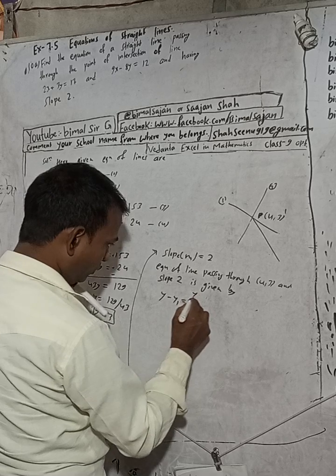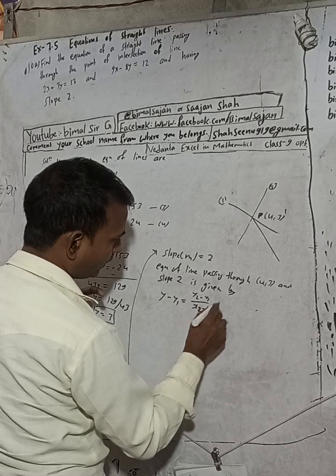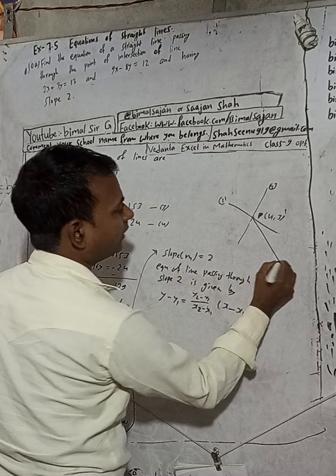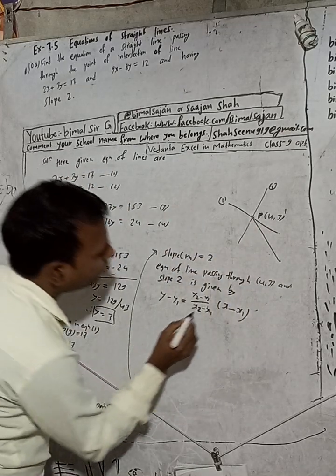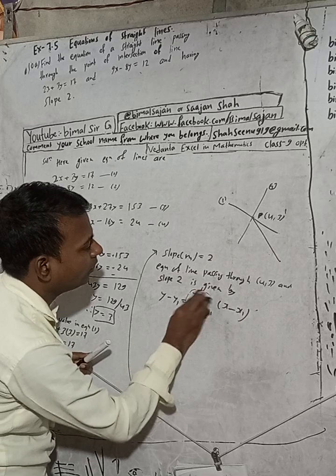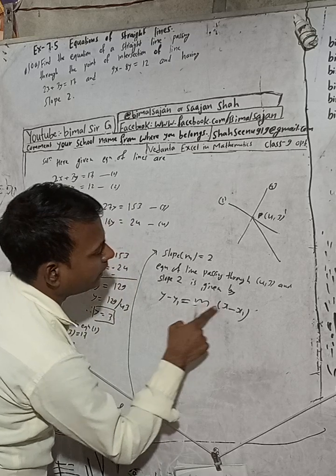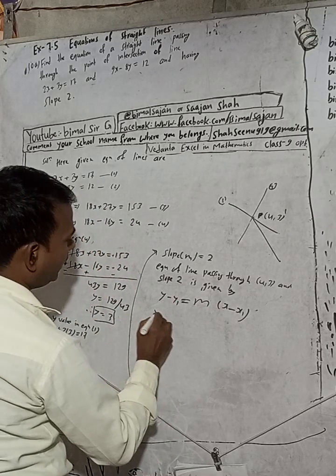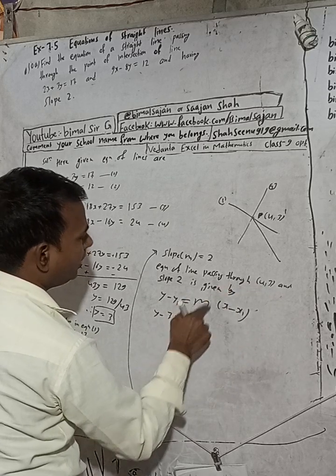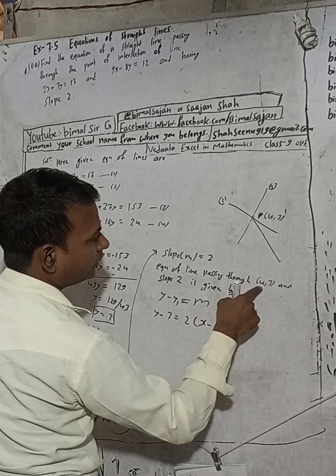Previously when we had two points we used (y2 - y1)/(x2 - x1), but here we only have one point so we use slope m directly. Substituting: y - 3 = 2(x - 4), where y1 = 3, m = 2, and x1 = 4.